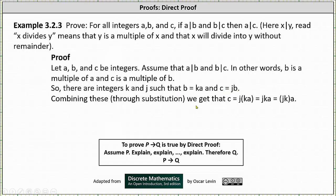Combining these two equations through substitution, we can form the equation C equals J times the product of K and A. Notice to form this equation, we use the equation C equals J times B and substitute K times A for B.